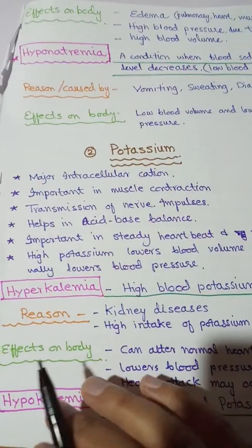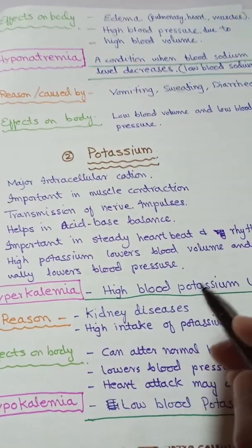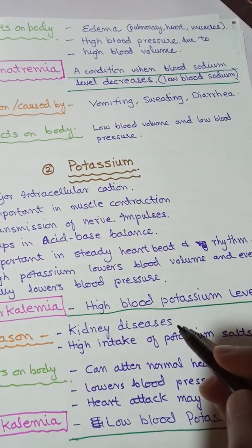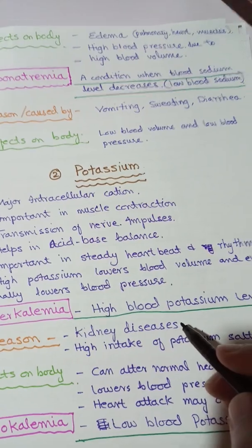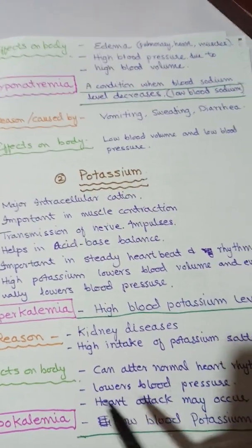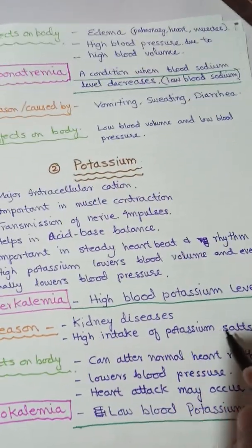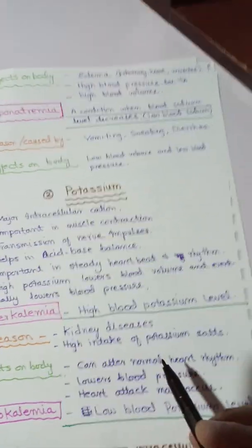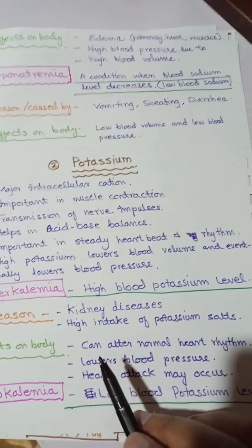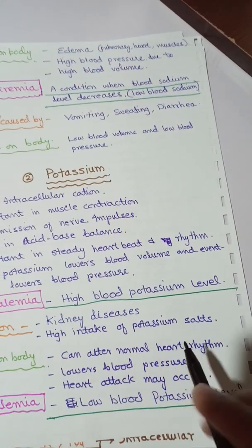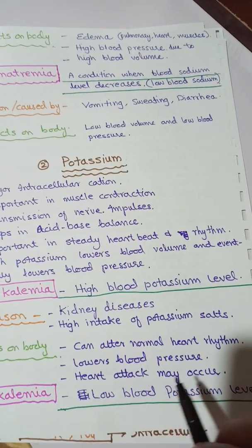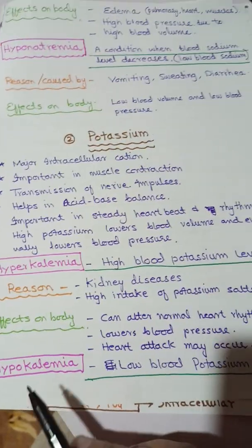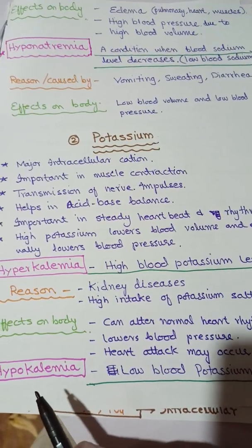Hyperkalemia is high blood potassium level. The reasons include kidney or renal diseases and high intake of potassium in the diet. The effects on our body due to hyperkalemia include altered normal heart rhythm, lowered blood pressure, and heart attack may occur.